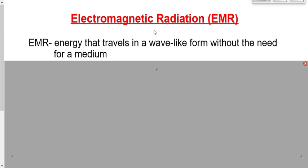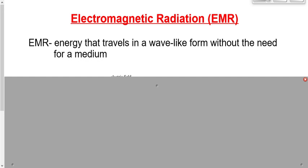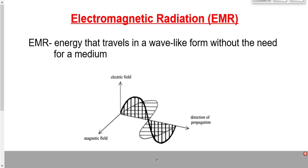We've got these two changing fields that are in phase with each other, perpendicular to each other, and traveling perpendicular to both of those waves. As a drawing, we've got an x-axis — that's the way the wave is traveling — a y-axis where the electric field is, and a magnetic field on the z-axis. Notice these waves are perpendicular to each other, in phase with each other, traveling perpendicular to both waves, and they're sinusoidal in nature.